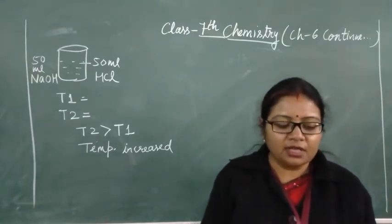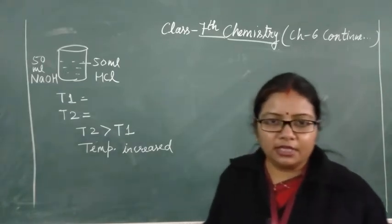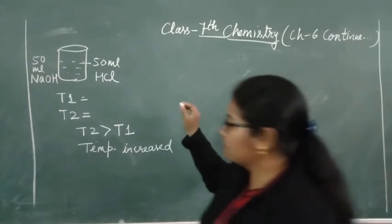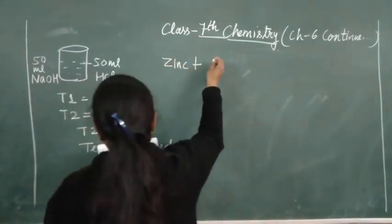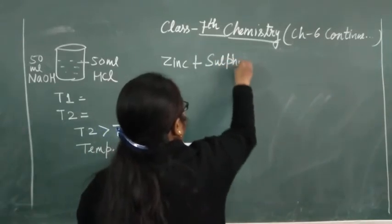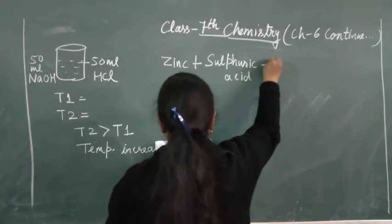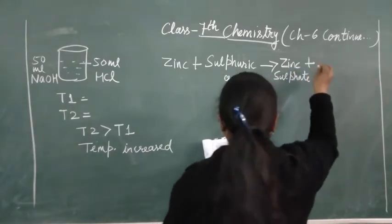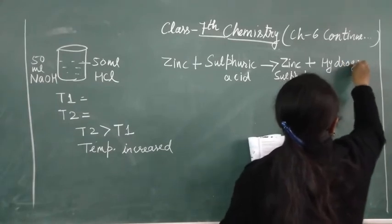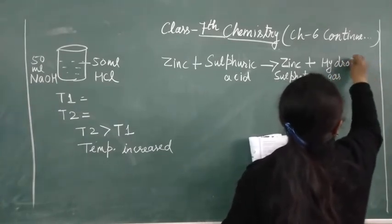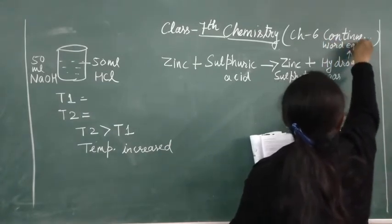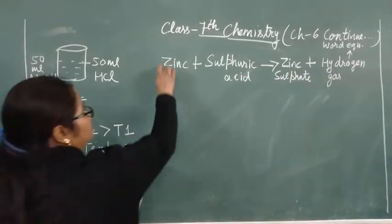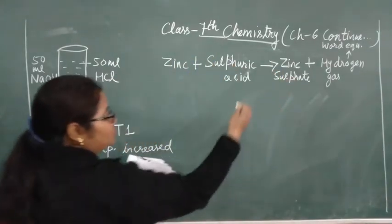Now if you open page number 77, the last topic of this chapter is chemical equation. Now till now we have written all the reactions by using words. For example, we have written: zinc plus sulfuric acid equals zinc sulfate plus hydrogen gas. This is called a word equation. When we write these chemical reactions by using the symbols of all these, then it is called a chemical equation.